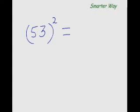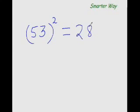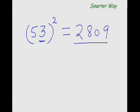Now find the square of 53. As you can see, 53 is 3 more than 50. So add that 3 to 25, that is 28, and the square of 3 is 9, so 09 — this is your answer.